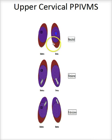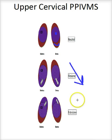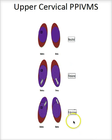C0 in purple, C1 in brown. When we bilaterally flex we get a posterior glide of the convex C0 on the concave C1. When we extend, we get an anterior glide of the convex C0 on the concave C1.